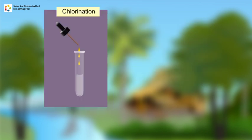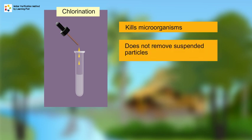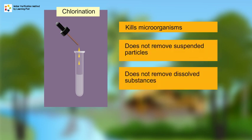Chlorination is carried out by adding chlorine to water. This method kills microorganisms in water, but does not remove the suspended particles and dissolved substances.